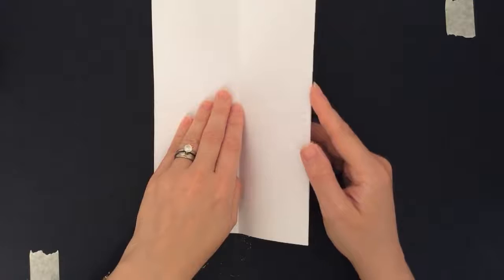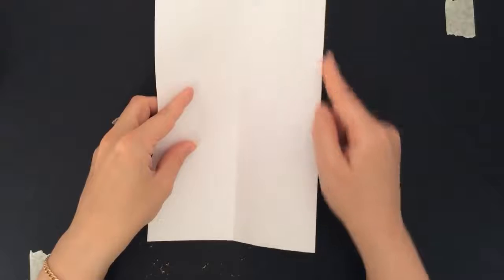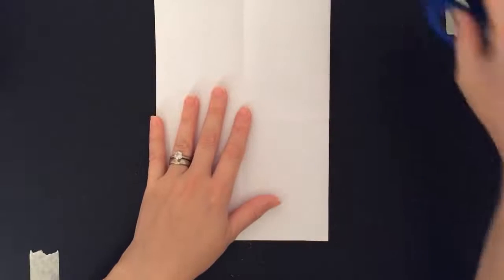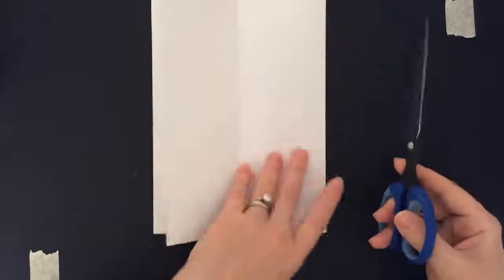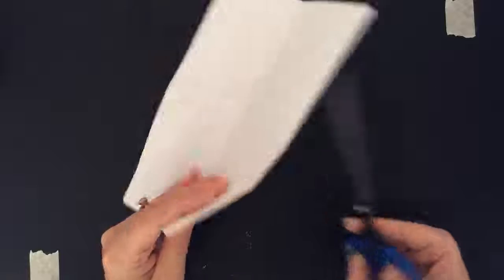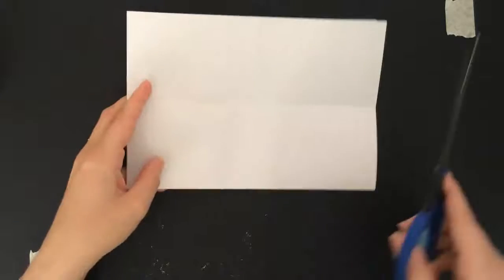I'm going to unfold these two flaps like so. And I'm going to start my scissors at the fold. Once again, at the fold. Super key. If you fold in from the two flaps, it will not do what it's supposed to do and you'll need to get another piece of paper.